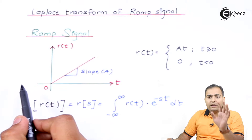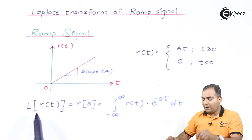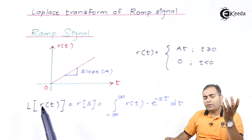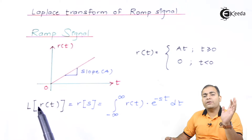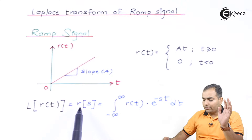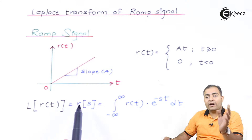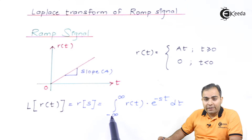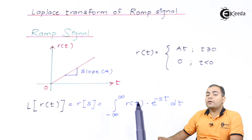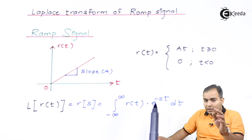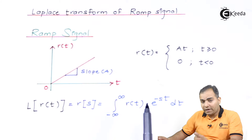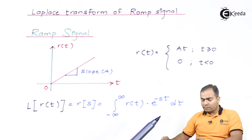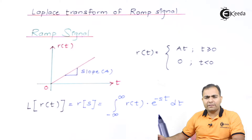Next we find the Laplace transform. The Laplace transform R(s) of a time signal r(t) transforms it into the Laplace domain. According to the definition of the Laplace transform, we multiply the function by e^(−st) dt and integrate over the range from minus infinity to infinity. This is what is written on the board.